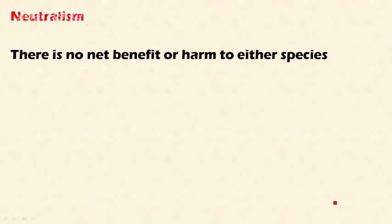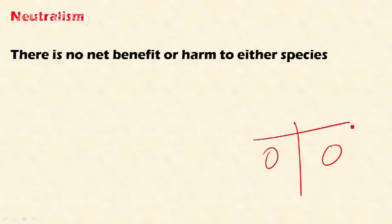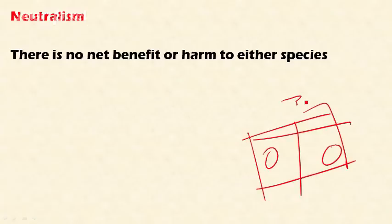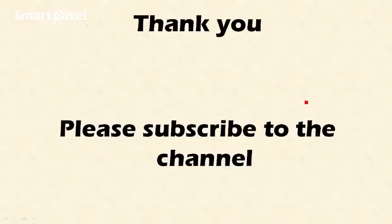Neutralism is the biotic interaction where there is no net benefit or harm to either species. Both interactions are zero — no positive or negative effects. This seldom happens in nature, because there must be some interaction between organisms, either positive or negative. Truly neutral interaction is very rare.